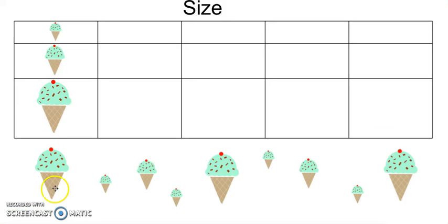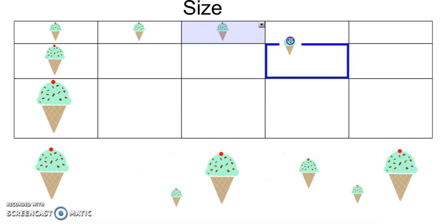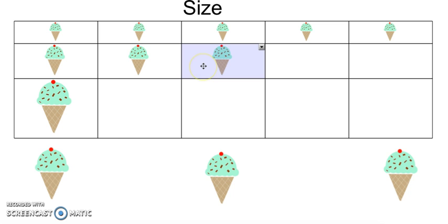Now let's group these objects by size. As you can see, there are small, medium, and large ice cream cones. We are going to group these objects by size. All of my small ice cream cones will go here, all of my medium ice cream cones will go here, and all of my large ice cream cones will go in this column. One, two, three, four — those are all my small ice cream cones. Now grouping medium: one, two. I have two medium size ice cream cones.